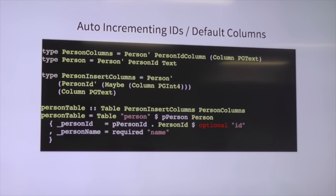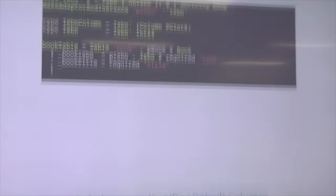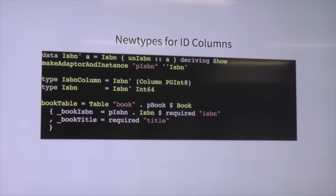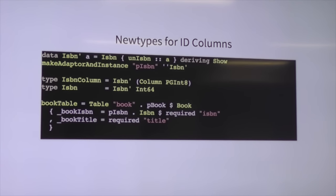It only uses template Haskell for generating the profunctor instance, and really that's the only constraint on your data type — other than the fact that everything needs to be type-parameterized because you need to transform everything. And that's a fairly non-offensive template Haskell too: really all it's defining is a way to go to a tuple and back. Nowhere near as onerous as what the template Haskell for Persistent does to data types. Otherwise it's completely template Haskell free.